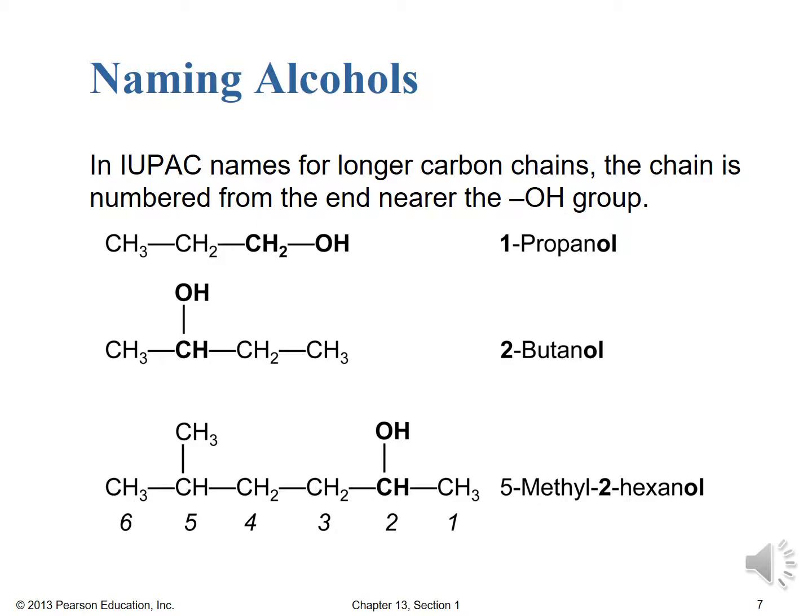Looking at butane, carbon number 2 has the OH group. If we tried to number starting from the other end, the substituent would be on carbon 3, giving 3-butanol — which would be incorrect, because we must use the lowest possible number, so it's really 2-butanol. For a substituted alcohol, if the OH group is on carbon 2 and a methyl group is on carbon 5, the alcohol has higher priority, so it gets the lower number.